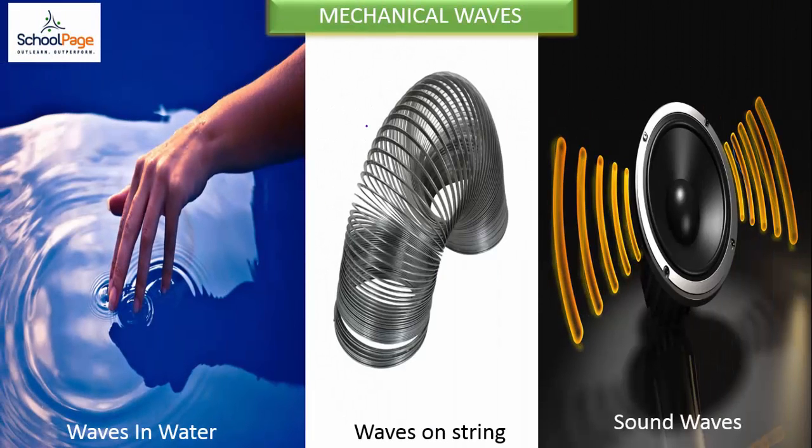Mechanical waves are waves which require a material medium for their propagation. Examples include waves in water or on a string, and sound waves, which are considered mechanical waves as they do not travel through vacuum.